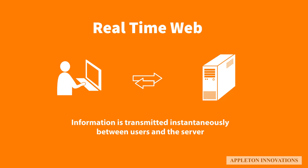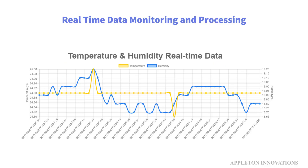Next, applying the standards of Real-time Web to Internet of Things. The Real-time Web is one where information is transmitted instantaneously between users and the server, or between users and users. By integrating IoT devices with a Real-time Web application, IoT devices can send data almost instantaneously. This enables real-time data monitoring and processing. An example is a Real-time IoT Dashboard.